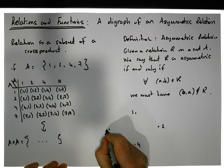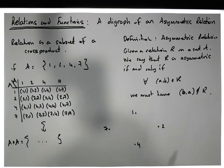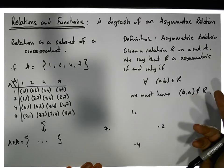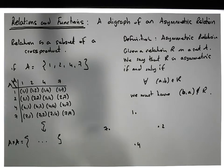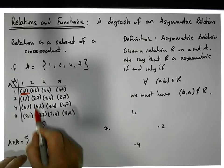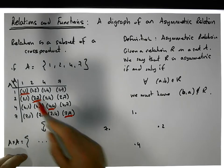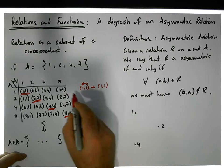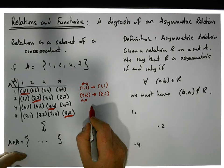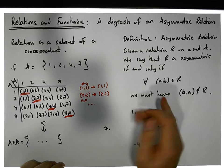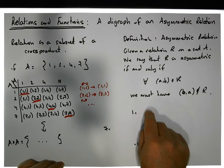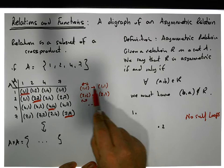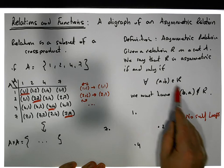Let's draw a digraph with nodes 1, 2, 4, and 7. For an asymmetric relation, if you flip an ordered pair and it gives you itself — as with self-loops like (1,1), (2,2), (4,4), (7,7) — that flipped pair would still be in the relation, contradicting asymmetry. So the digraph of an asymmetric relation cannot have any self-loops.